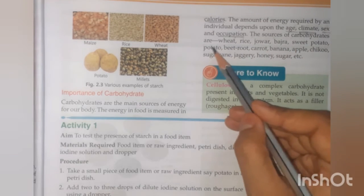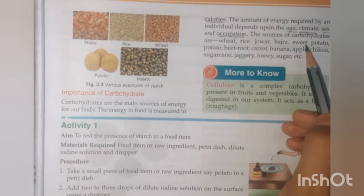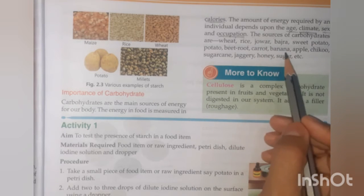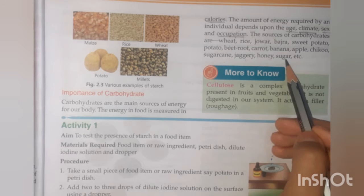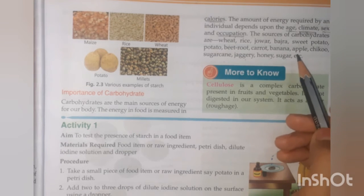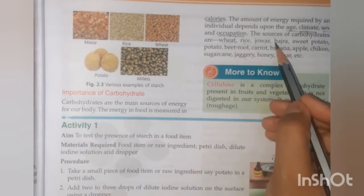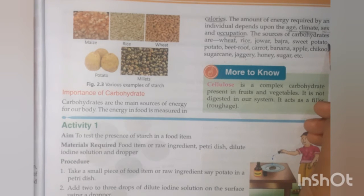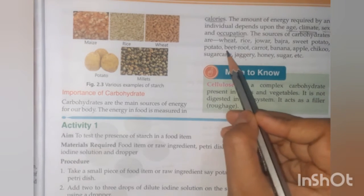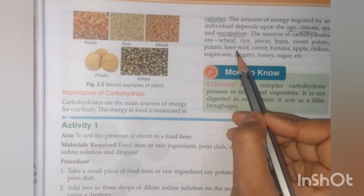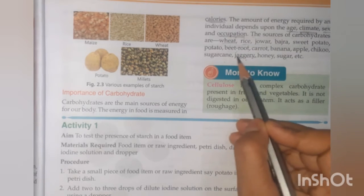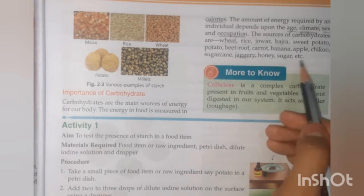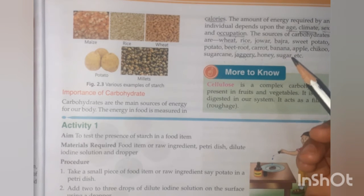The sources of carbohydrates include wheat, rice, jowar, bajra, sweet potato, potato, beetroot, carrot, banana, apple, chico, sugar, jaggery, honey, and so on. All of these foods provide carbohydrates.